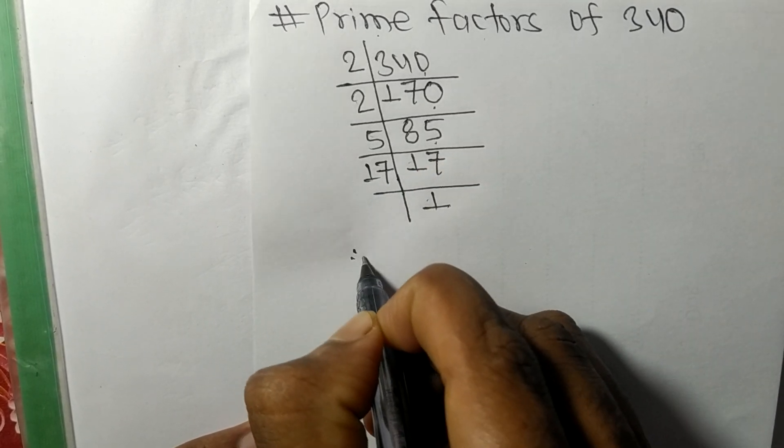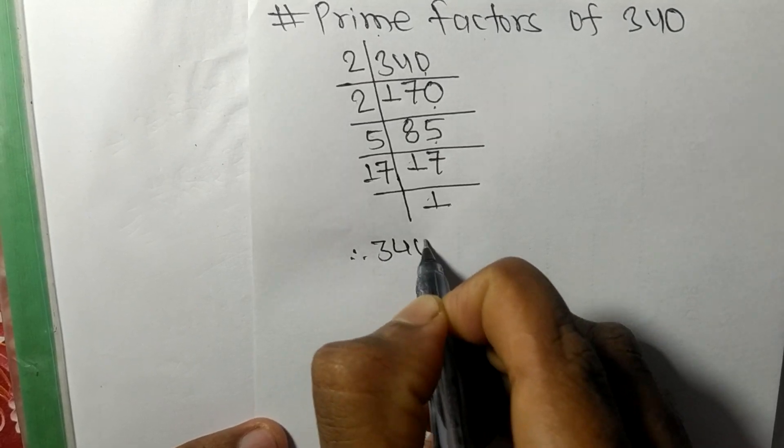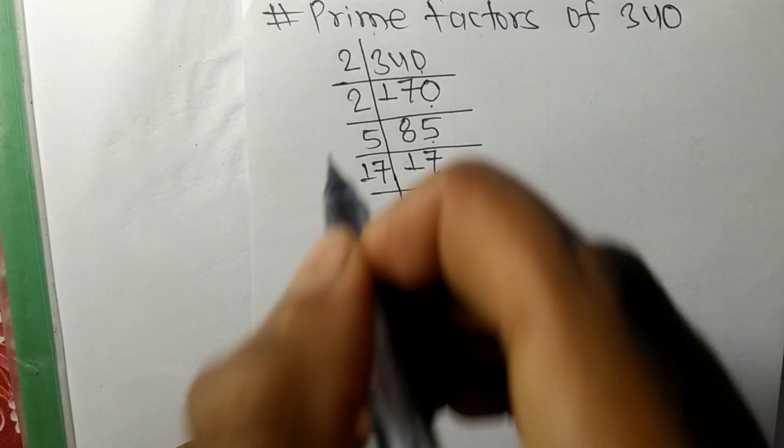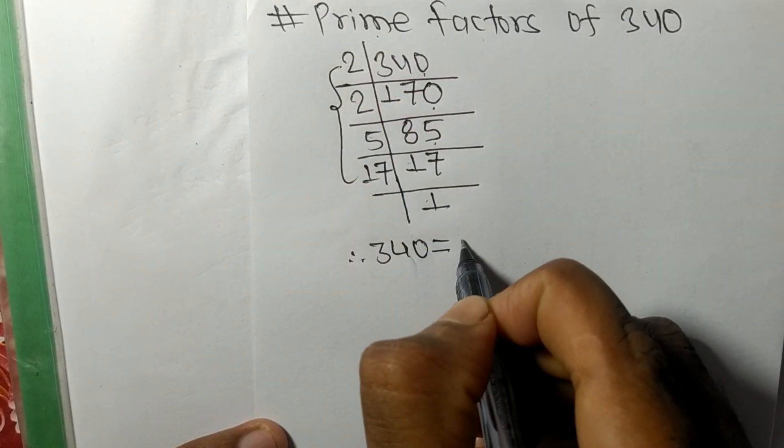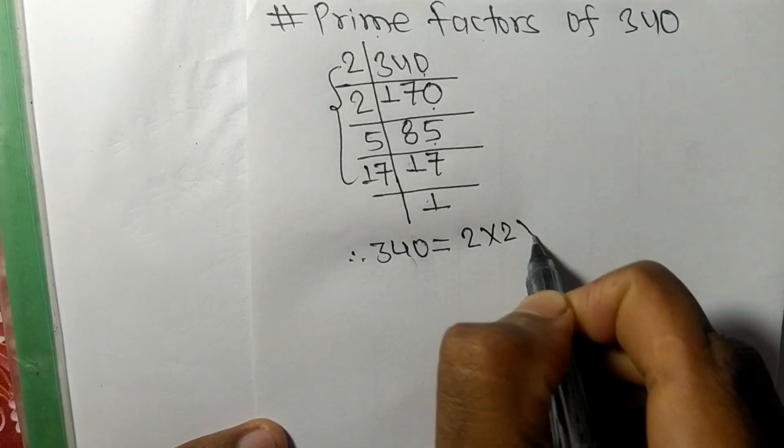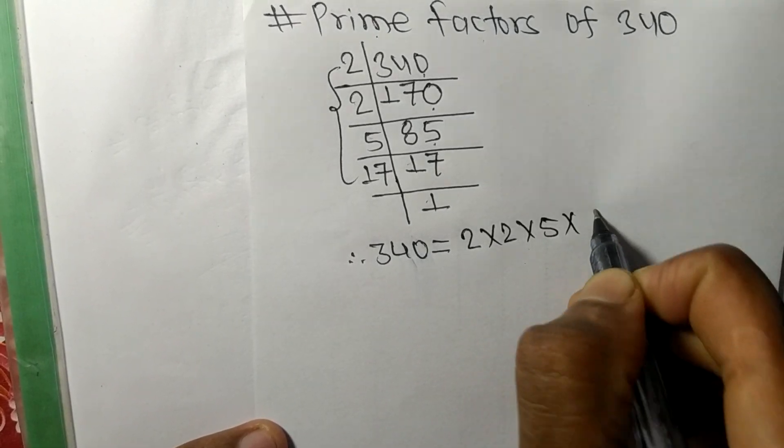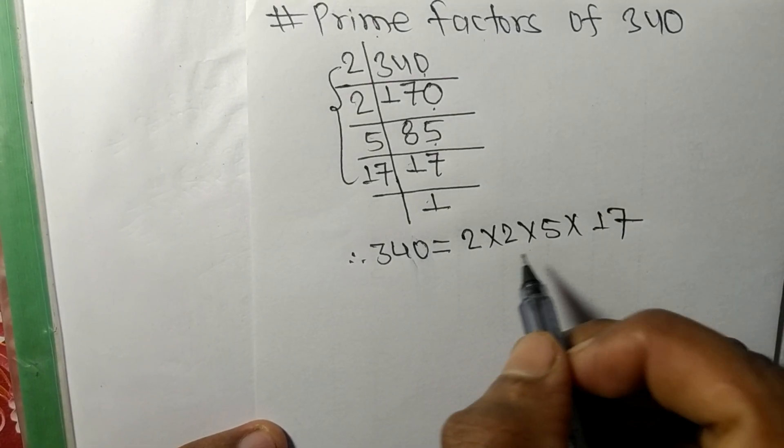Therefore, 340 is equal to, from this side, 2 times 2 times 5 times 17.